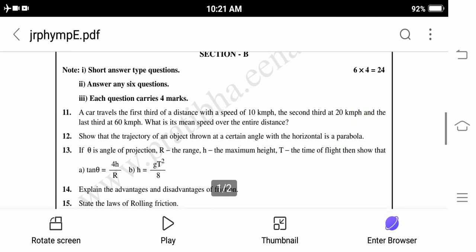Eleventh question: A car travels the first third distance with a speed of 10 km per hour, second third is 20 km per hour, and the last third is 60 km per hour. What is the mean speed over the entire distance? Twelfth question: Show that the trajectory of an object thrown at a certain angle with horizontal is a parabola.